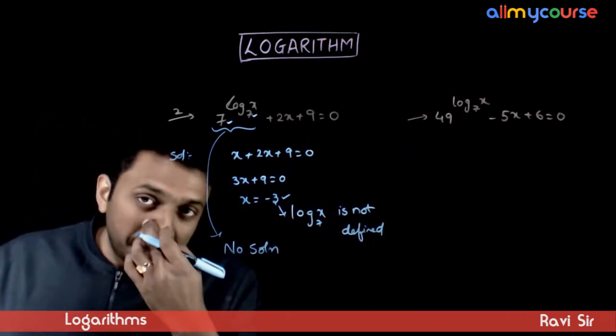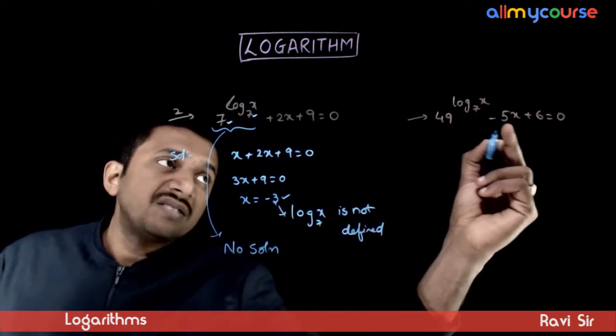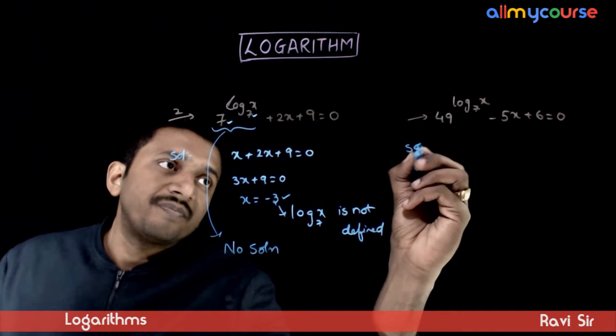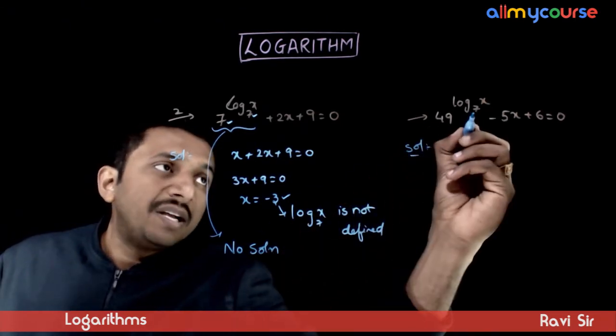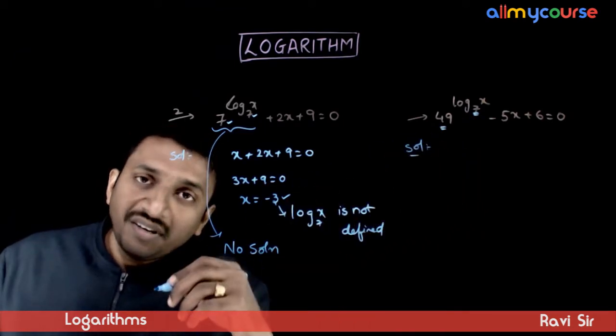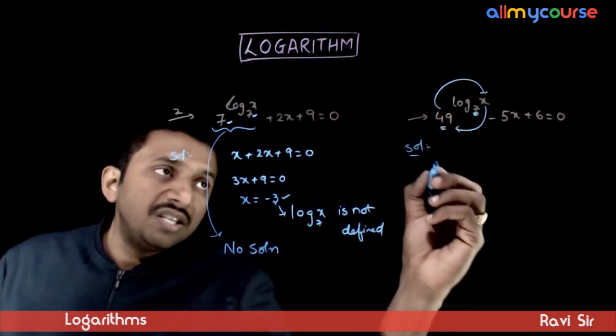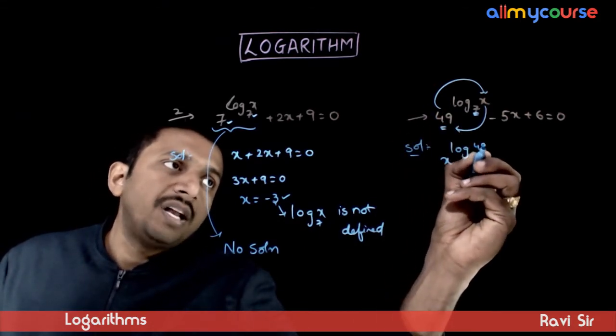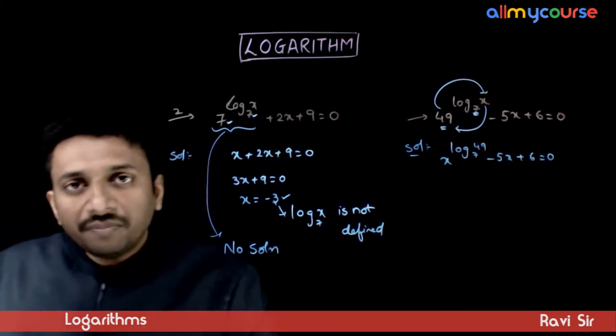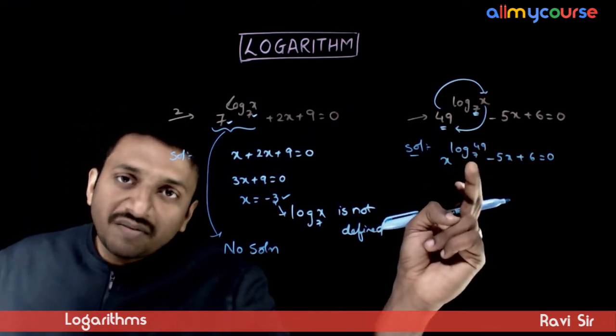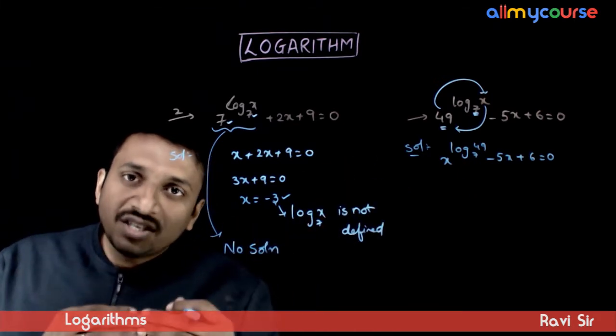If you go to the next question, 49 power log x to the base 7 minus 5x plus 6 is equal to 0. Here, what I use is again the simplification formula. But here, 7 and 49 are different. So I can take 49 here and bring x here. If I exchange these numbers, you get x power log 49 to the base 7 minus 5x plus 6 equals 0. Log 49 to the base 7: to what power should 7 be raised to get 49 as the answer? Answer is 2.